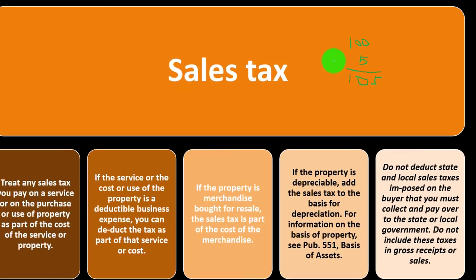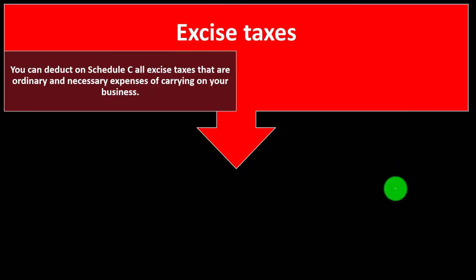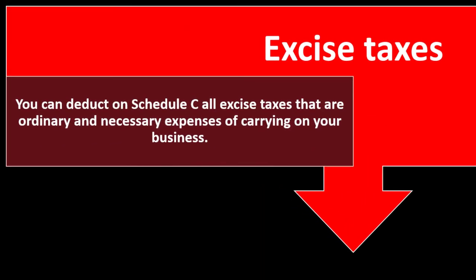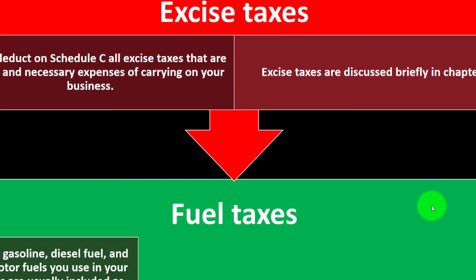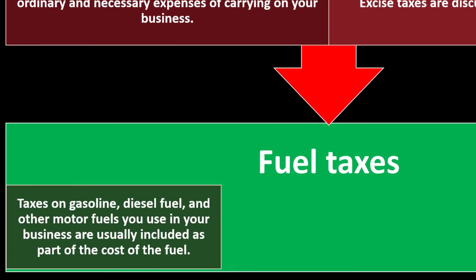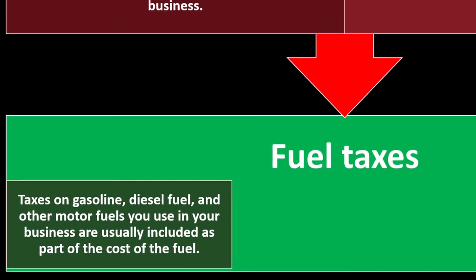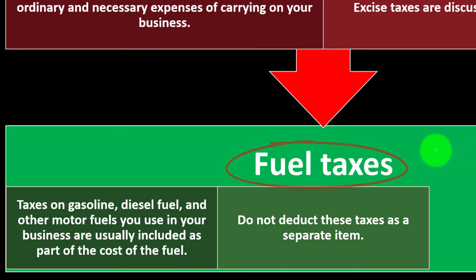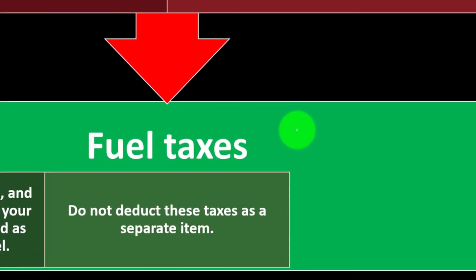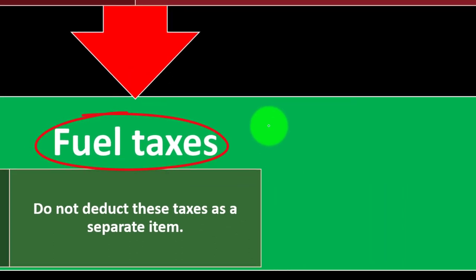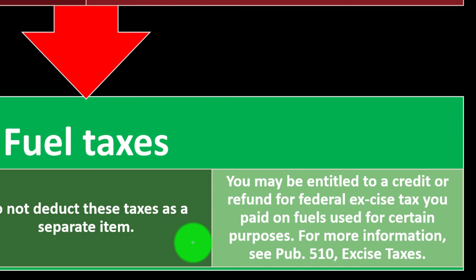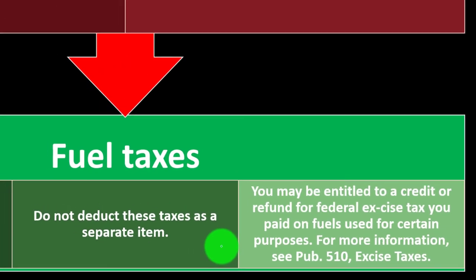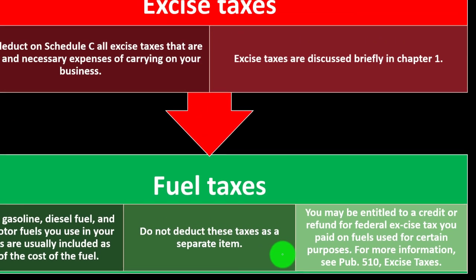Excise taxes: you can deduct on Schedule C all excise taxes that are ordinary and necessary expenses of carrying on your business — discussed briefly in chapter one. Fuel taxes on gasoline, diesel, and other motor fuels used in your business are generally included as part of the cost of the fuel; do not deduct them as a separate item. You may also be entitled to a credit or refund for federal excise tax paid on fuels used for certain purposes — see Publication 510.